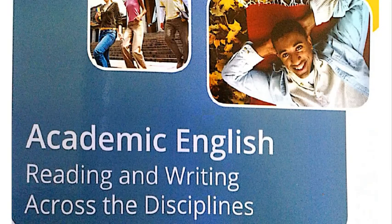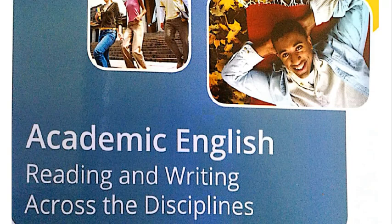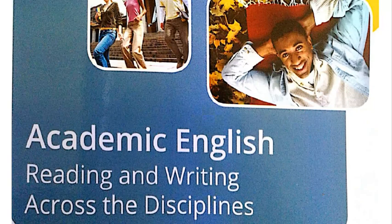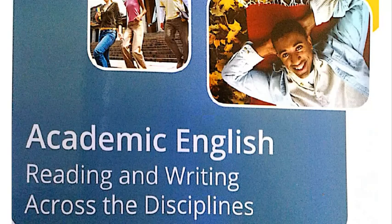For this assignment, to answer it correctly and get the right marks, you need to have the prescribed book for this module. The name of the book is Academic English Reading and Writing Across the Disciplines. You do not have to buy the hard copy. You can get a PDF version from Telegram or any other place where you can download PDFs.